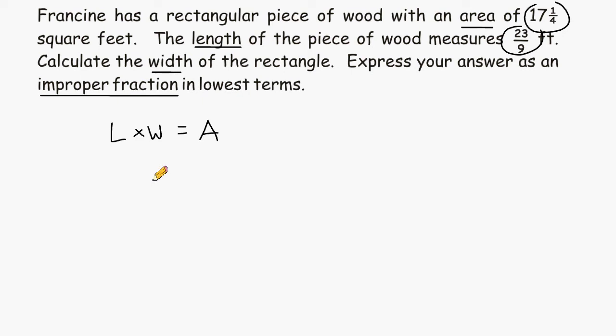So what we are going to do is we are going to take the given length, which is 23 ninths, and we are going to multiply that by w. We're going to leave that as a variable for now because that's what we are trying to figure out. And we know that the product of 23 ninths and whatever w is will result in an area of 17 and 1 quarter.